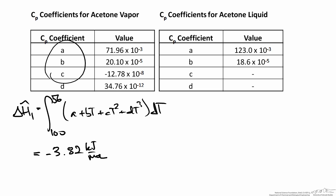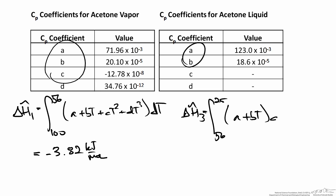Our second step involves a change in phase, which we will come back to. Moving to the other sensible heat calculation — the cooling of the liquid — to calculate delta H3, we integrate the heat capacity from the boiling point at 56°C to the outlet condition at 25°C. For the liquid phase, we have two coefficients and integrate A plus BT with respect to temperature. Evaluating this integral and plugging in the coefficients, the sensible heat for this step is negative 4.06 kJ/mol.